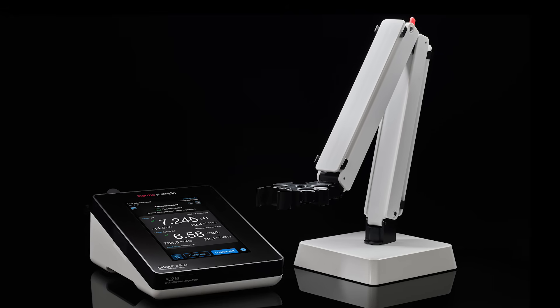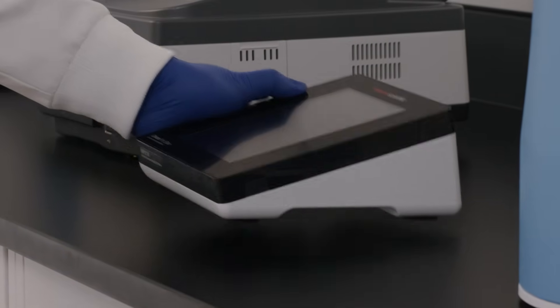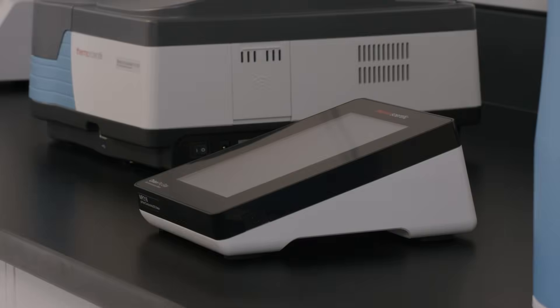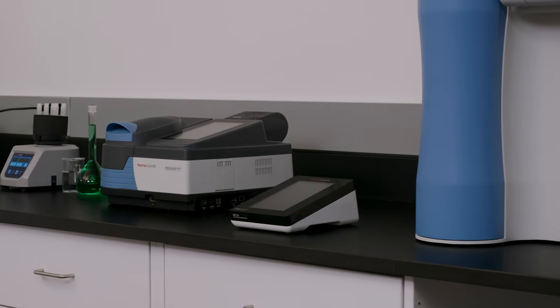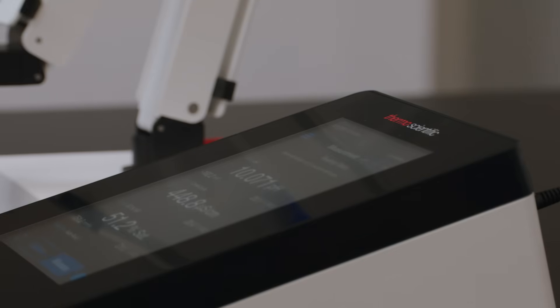Strong as it is smart, the Orion ProStar is built to last. Constructed from durable materials, it is lightweight with a small bench footprint. Rounded edges and smooth surfaces also make cleanup a breeze.